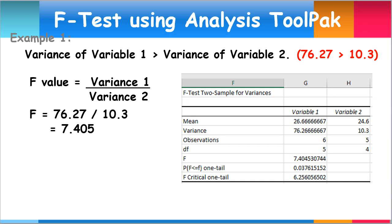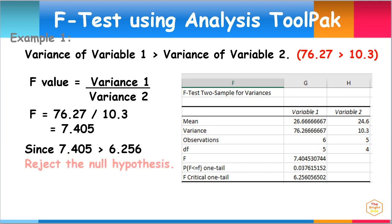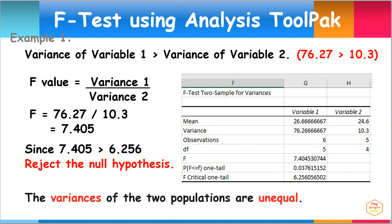The decision rule is: if the F-value is greater than F-critical 1-tail, we reject the null hypothesis. Since 7.405 is greater than 6.256, therefore we reject the null hypothesis. Thus, the variances of the two populations are unequal.